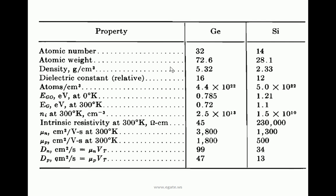These are basic properties comparing germanium and silicon. The constant values for them: atomic number for germanium 32, silicon 14; atomic weight germanium 72.6, silicon 28.1; density in grams per centimeter cube 5.32 for germanium, 2.33 for silicon, and many other properties.